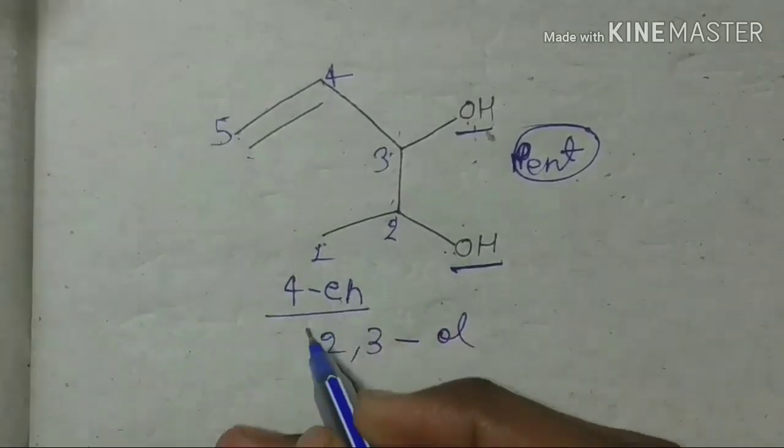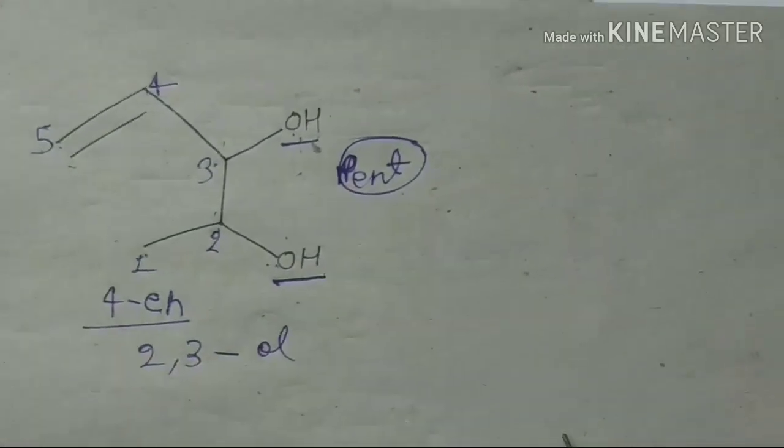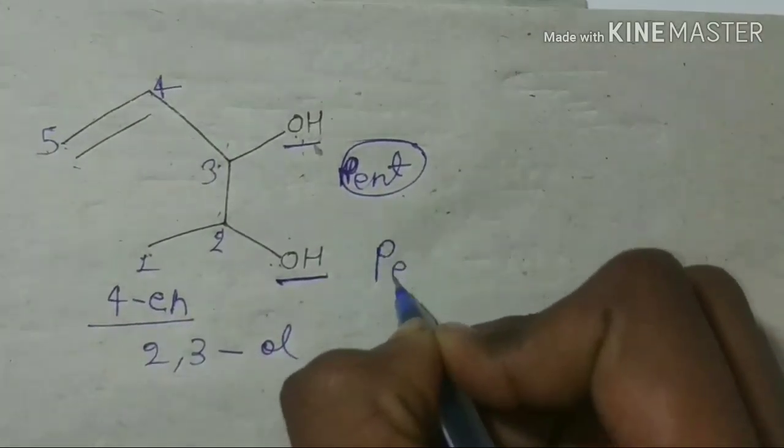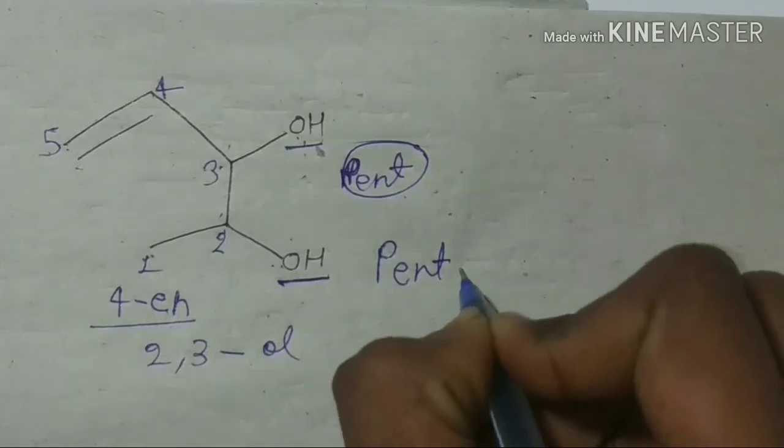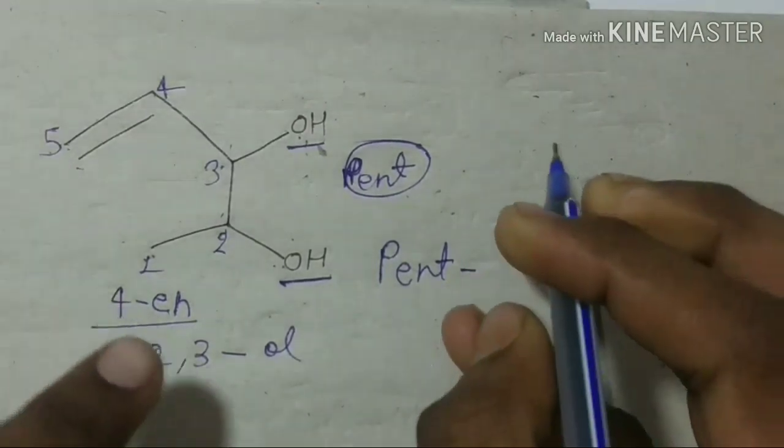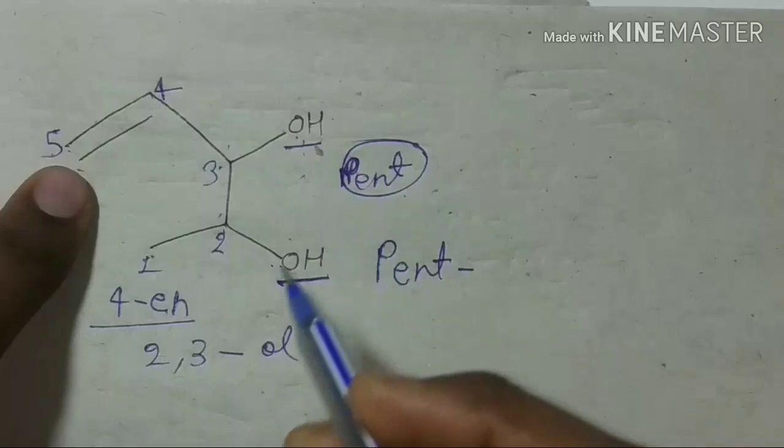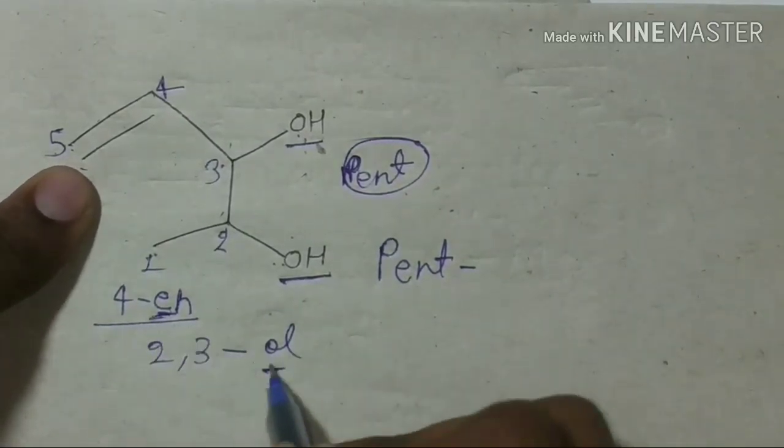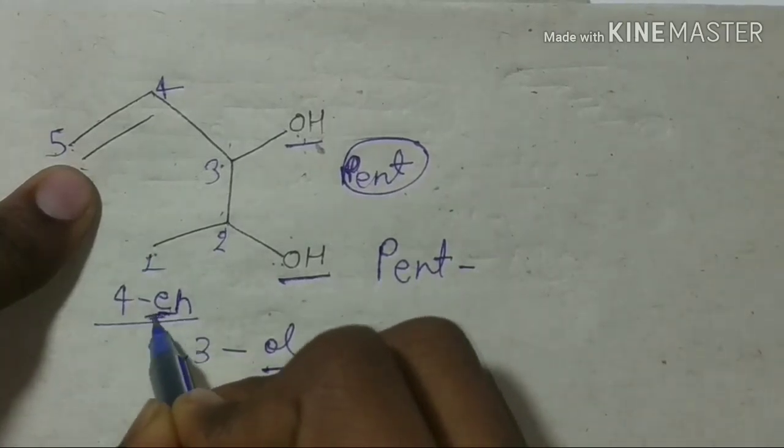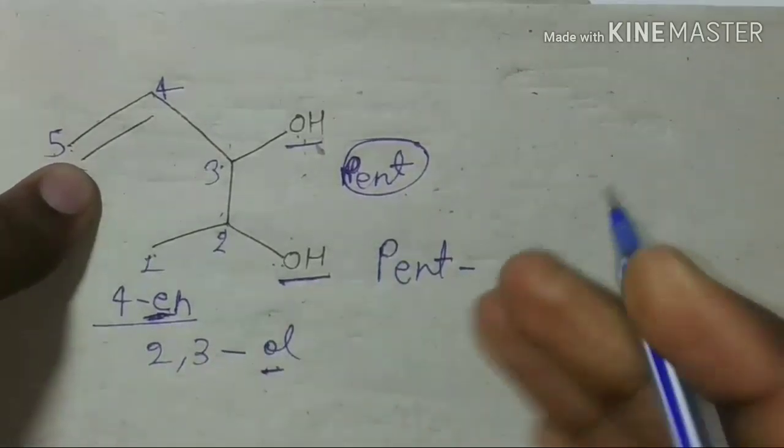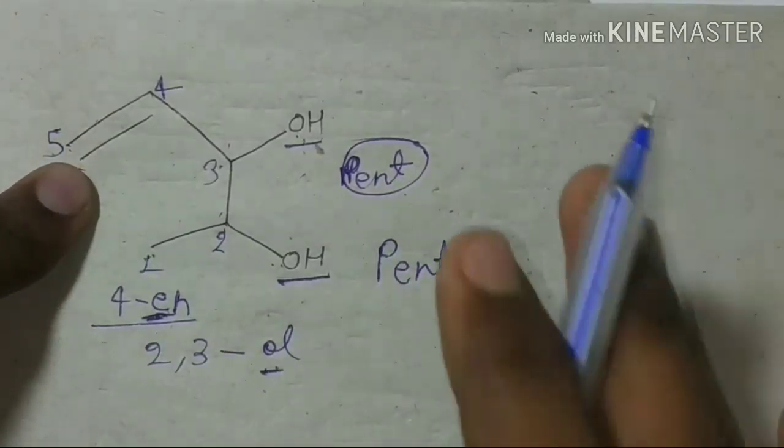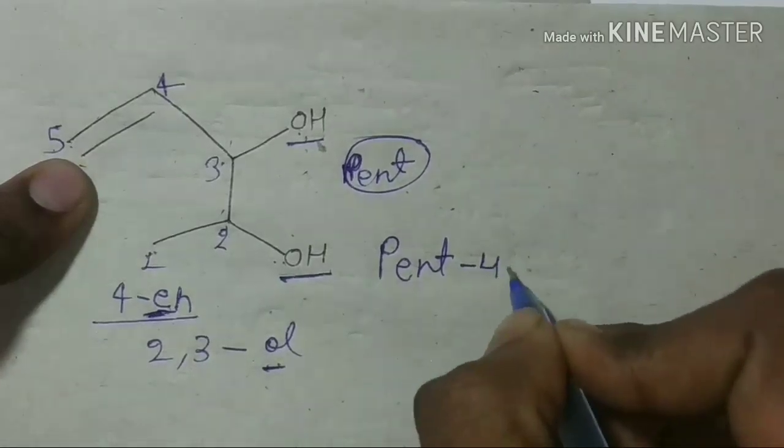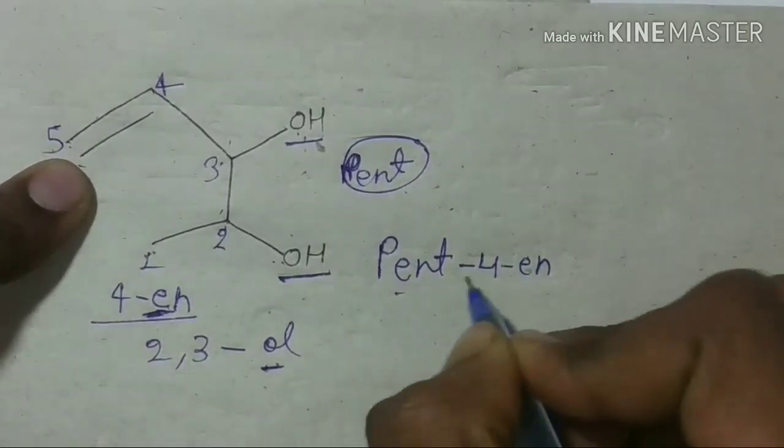Functional group. Now let's see the nomenclature. Clear nomenclature. What do we do? Because there are 5 carbons, no substitute, pent. Pent. And what do we get? Four. Now let's see the functional group nomenclature alphabetically. Ene, all. Ene, all. Pent-4-ene.